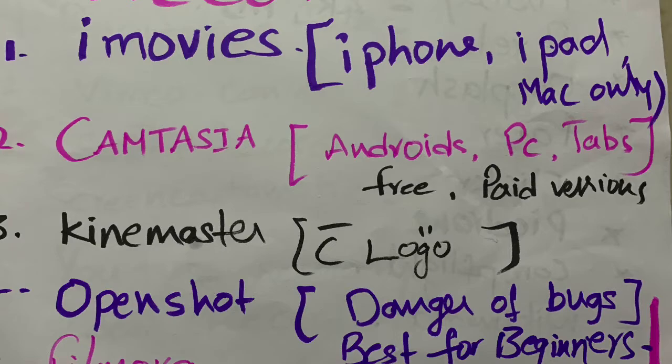For Androids and for PCs, Camtasia and Openshot is the best one for beginners. In Openshot there is one disadvantage: it contains bugs, so your computer or mobile may get attacked by viruses. But in Camtasia, it is a little tough for the beginners, but once you are accustomed to Camtasia you can use it easily.